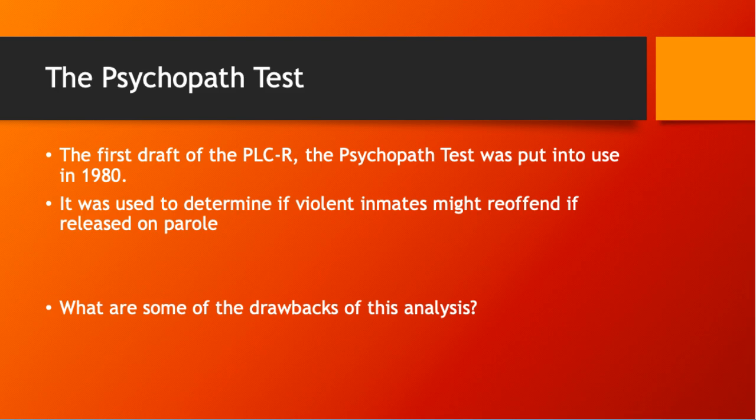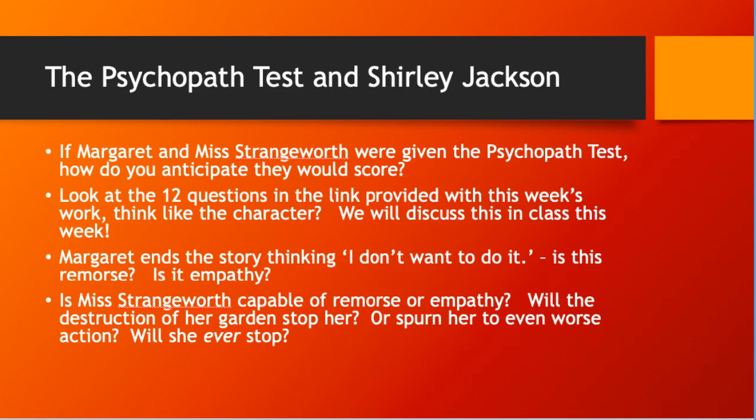I want you to think about the drawbacks of this type of analysis — the idea that your score on a particular test might affect your parole. How does this research on the Psychopath Test relate to the two stories we read this week? If Margaret and Mrs. Strangeworth were given the Psychopath Test, how do you anticipate they would score? Look at the 12 questions in the link provided and think like the characters. Think about whether they are faking empathy or showing it.